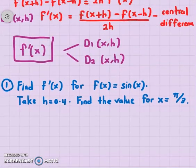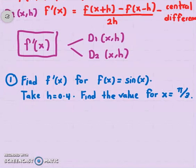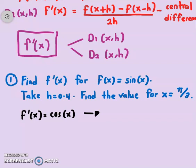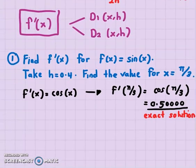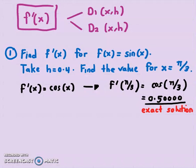Let's find the exact solution first. For f(x) = sine x, f prime x equals cosine x. So f prime at π/3 equals cosine of π/3, which gives 0.5. To five decimal places, this is our exact solution. I don't need any numerical method here — I can find the derivative easily. But let's see how close we can get using the D1 and D2 formulas.